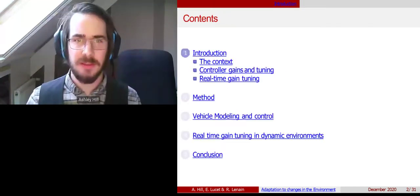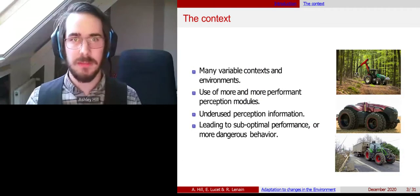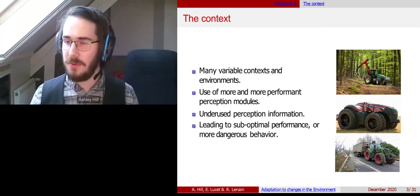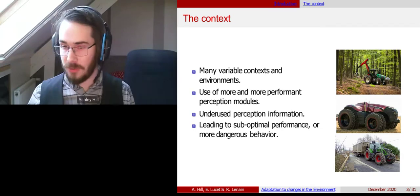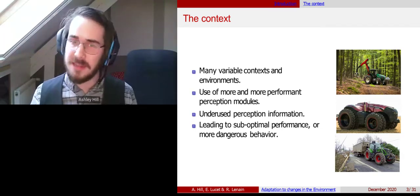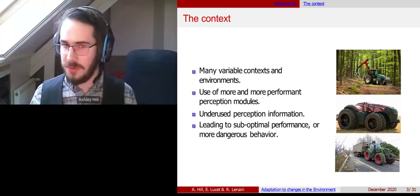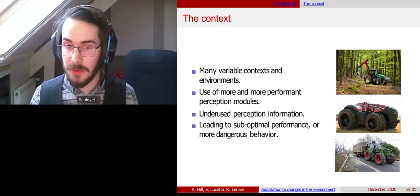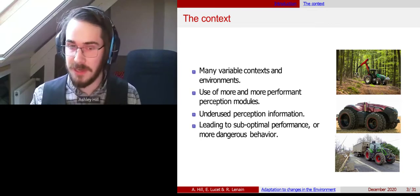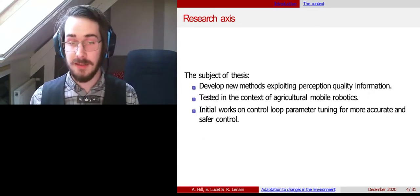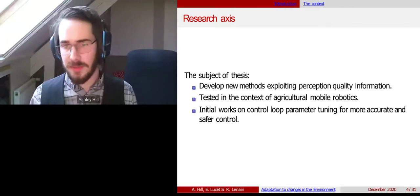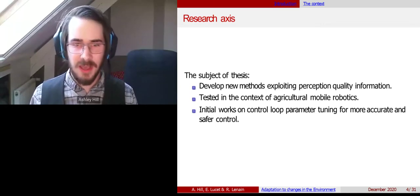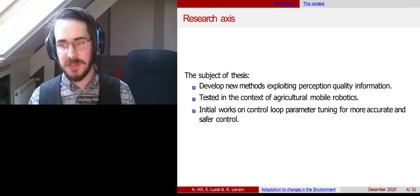Let's start with a bit of context. Mobile robots in agricultural contexts are used in many environments — here on the right we can have a tractor in a forest, in a field, or even on concrete on a road. To manage these different environments, we need more and more performant perception modules, which have fortunately been developed. However, the information from these perception modules tends to be underused, leading to suboptimal performance or even sometimes dangerous behaviors. This drove the development of my thesis: new methods exploiting perception information, tested in agricultural mobile robotics, with initial works on control loop parameter tuning for more accurate and safe control.